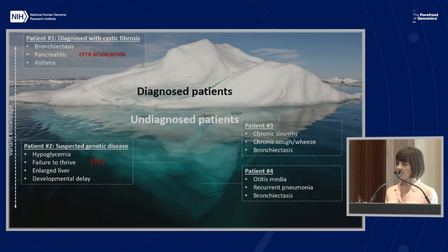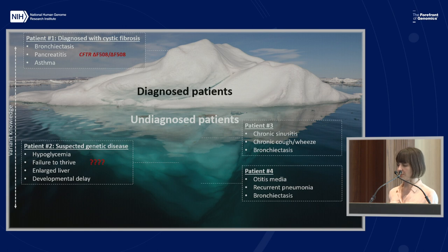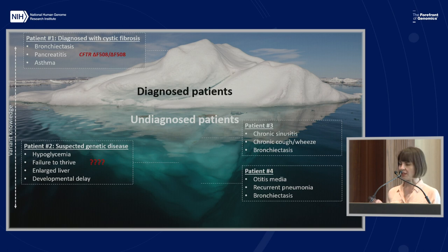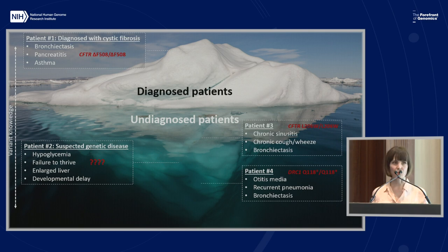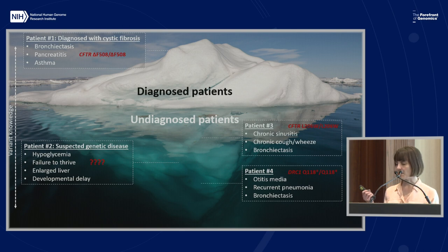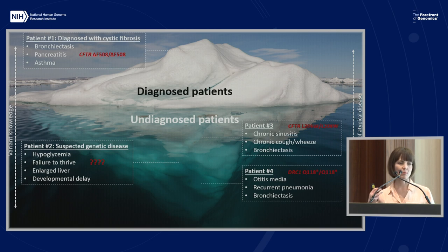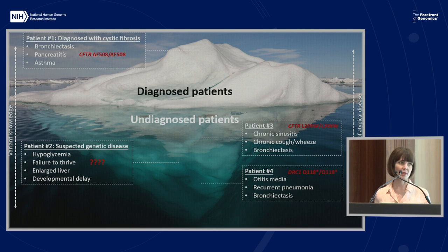Among undiagnosed patients, you also have ones like these. Patient number three and patient number four both have lung phenotypes, including bronchiectasis, but also sinusitis. However, they're adults and they haven't been diagnosed with a genetic disease. If you were to genotype these individuals, you would find that one of them had atypical cystic fibrosis while the other had two copies of a known pathogenic variant in a primary cilia dyskinesia gene. Because these patients have an atypical presentation and are adults, they don't immediately prompt a clinician to start doing genetic screening. And yet, if that genetic screening was done, they could be properly diagnosed and in some cases treated differently.